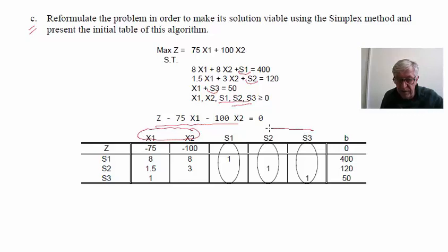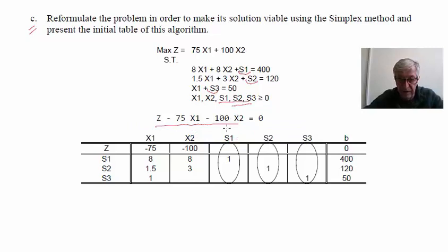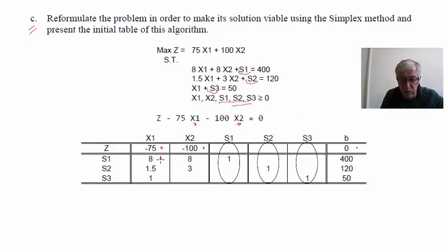The first row (Z row) has coefficients: −75 for x1, −100 for x2, and independent term 0. For restriction 1: 8 in x1, 8 in x2, 1 in s1, independent term 400. For restriction 2: 1.5 and 3, with 1 in s2. For the market condition: 1 in x1, 1 in s3, independent term 50.